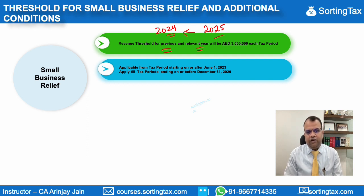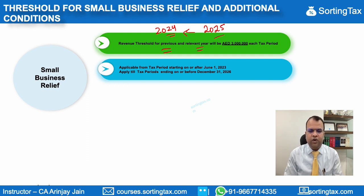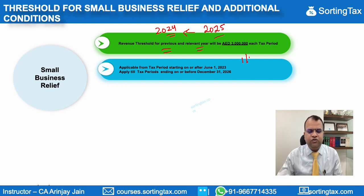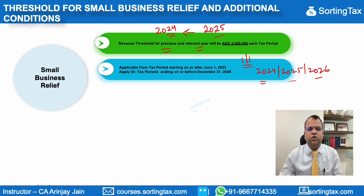This exemption is only available up to tax periods which end on or before December 31, 2026. Effectively, if your financial year commences on the 1st of January, you will be getting this exemption for 2024, 2025, and 2026 — a three-year period is what you will get the exemption for.